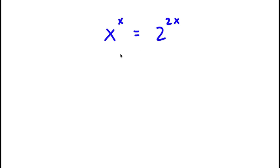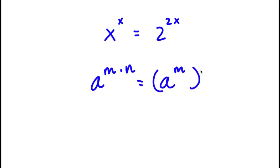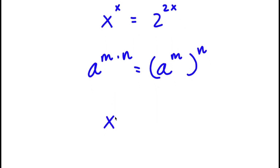If I have something in the form a to the power of m times n, this is the same thing as a to the power of m to the power of n. So 2 to the power of 2x, I'm going to rewrite that as 2 to the power of 2 to the power of x.